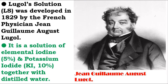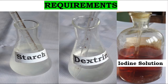Lugol's solution was developed in 1829 by French physician Jean Gouillet. It is a solution of elemental iodine at 5% and potassium iodide at 10% together with distilled water.